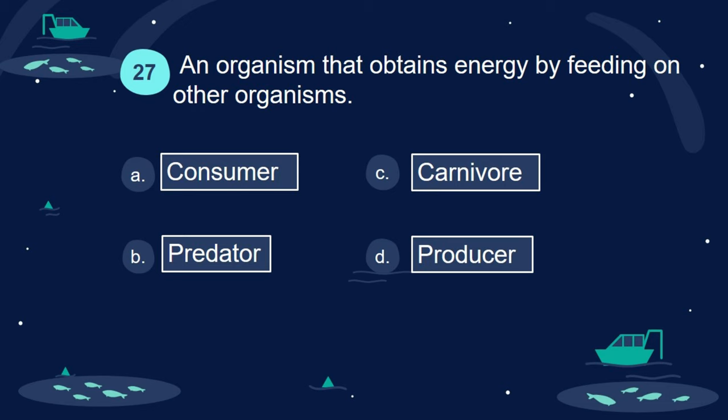Question 27. An organism that obtains energy by feeding on other organisms: A. Consumer. B. Predator. C. Carnivore. D. Producer.